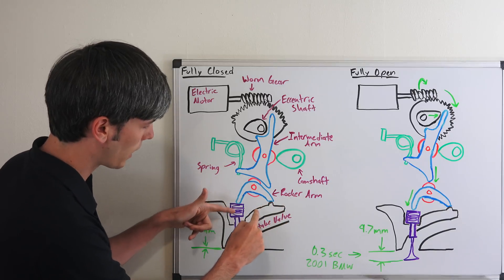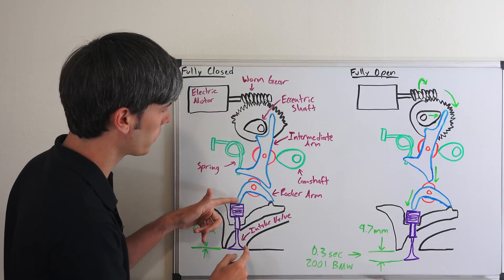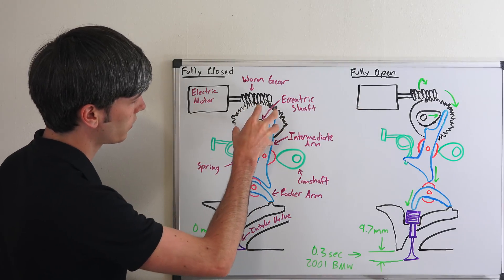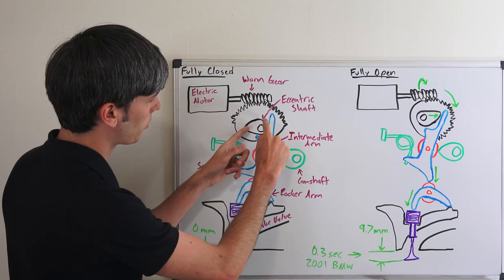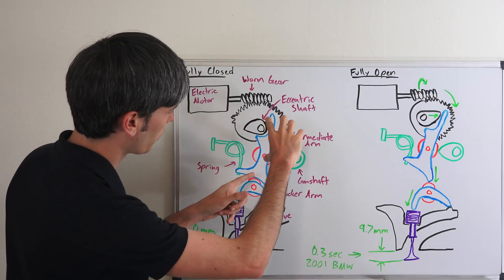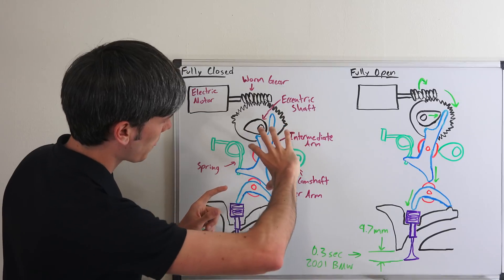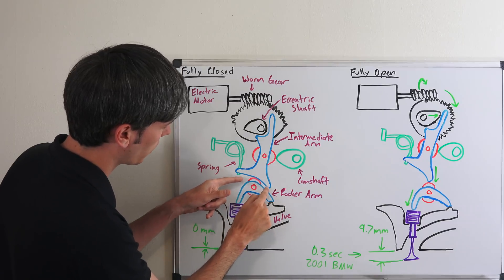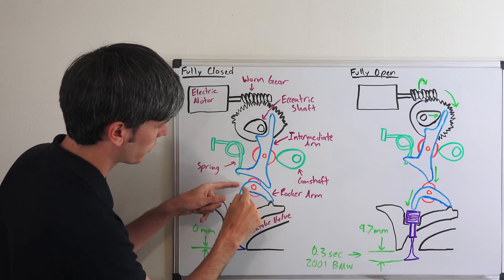That rocker arm is what's actually going to be opening and closing that intake valve. When you open it, you're going to rotate this gear this way, and that profile will push this intermediate arm closer to the camshaft. As a result, it's going to rotate, and as it rotates, this bottom portion where it starts to curve is going to start to push up against this roller.